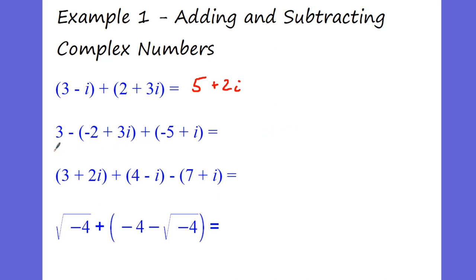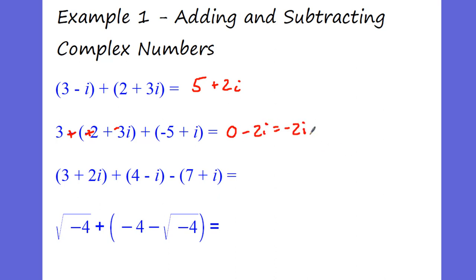We're going to add all of our real numbers. Remember, if you have a negative, distribute that negative to everyone. So that negative makes him positive, makes him negative. Now we can do our work. We have 3 plus 2 minus 5, that equals 0. Then we have negative 3i plus positive 1i, which is negative 2i. So our answer is negative 2i right there.